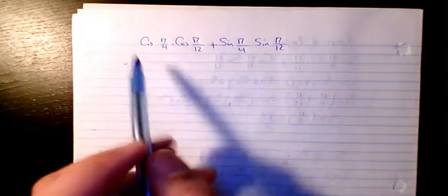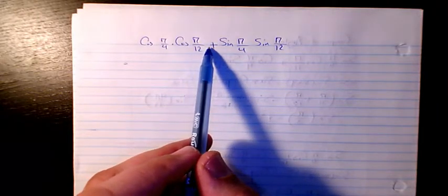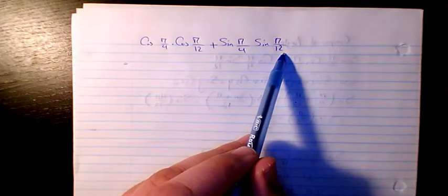This is another example for using compound angle for finding the value of this expression. So we have cosine pi over 4 times cosine pi over 12 plus sine pi over 4 multiplied by sine pi over 12.